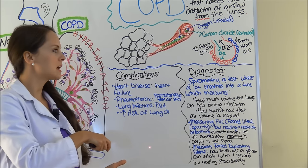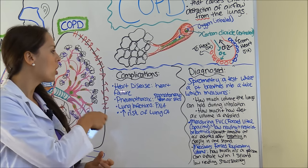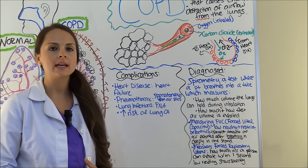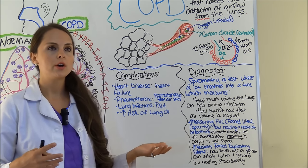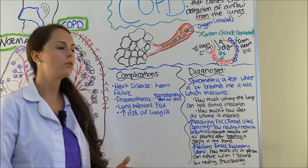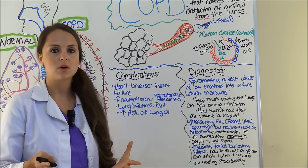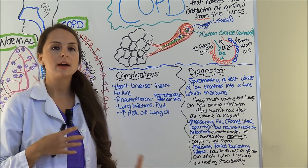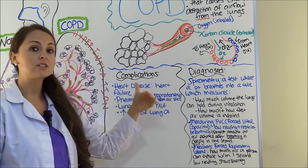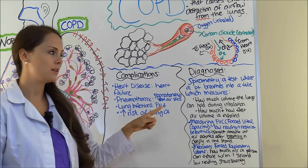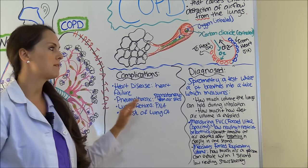Now let's look at the complications of COPD. A patient could experience heart disease like heart failure — particularly from the chronic bronchitis pathway leading to pulmonary hypertension and right-sided heart failure. Another complication is pneumothorax, where the lung collapses spontaneously due to the formation of those abnormal air sacs in the alveoli, especially in emphysema. This does happen and I have seen it with admitted patients. Other complications include lung infections like pneumonia, and an increased risk of developing lung cancer.